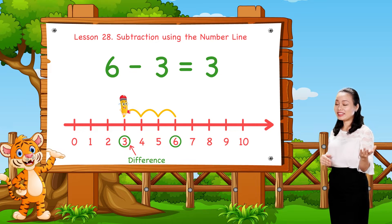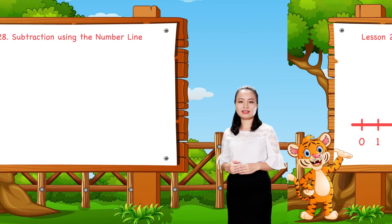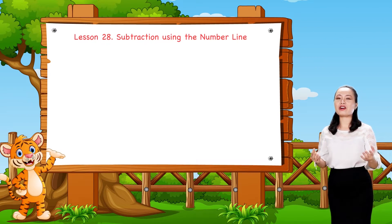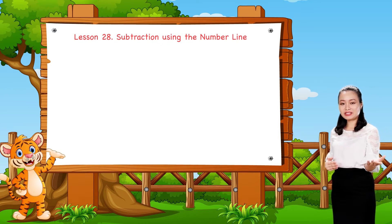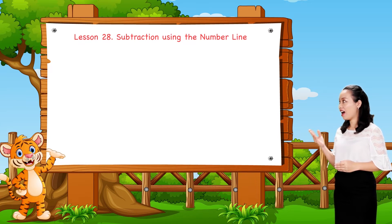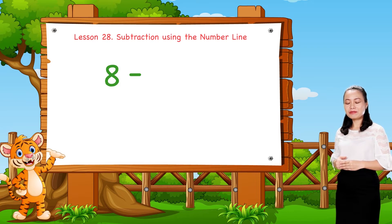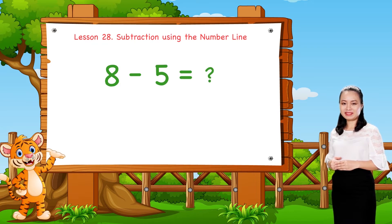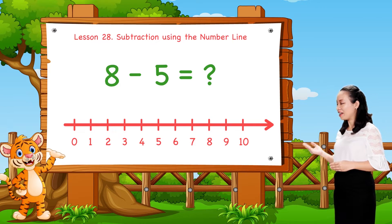6 minus 3 equals 3. It's easy, right? Now, let's take another example. Let's find 8 minus 5 using the number line.